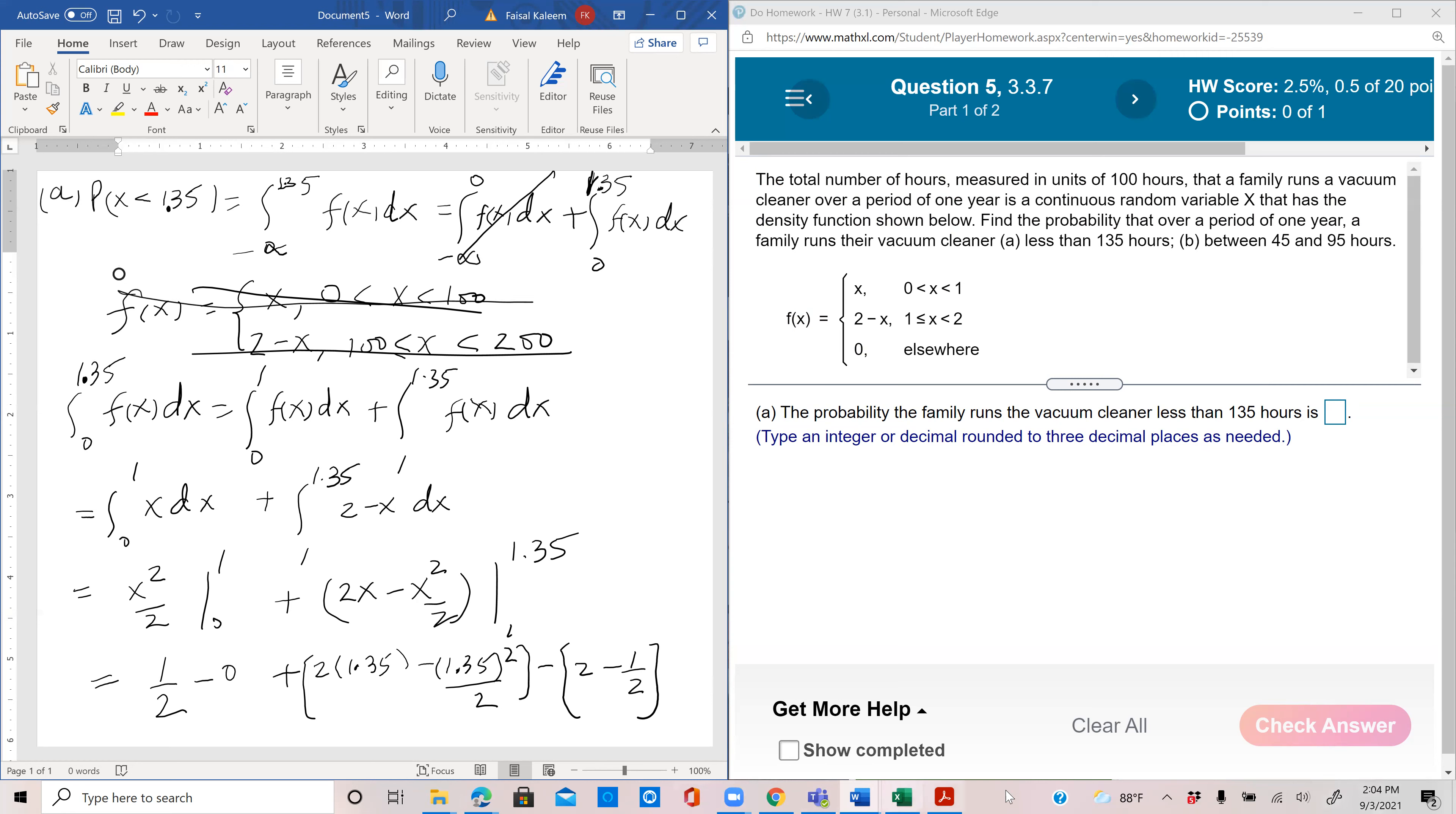Now we have the whole thing. This is 2 minus 1.35 squared by 2 minus 1.5 plus half in the beginning, so I get 0.789.